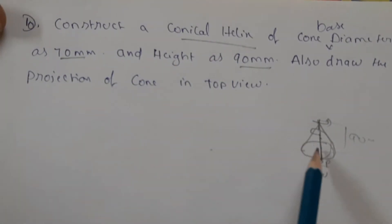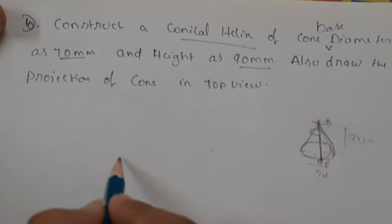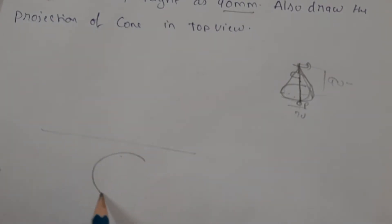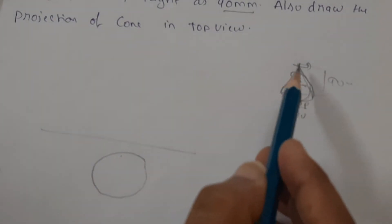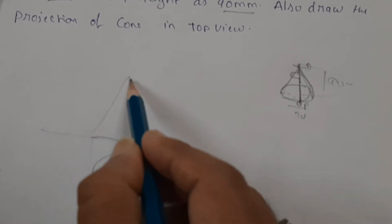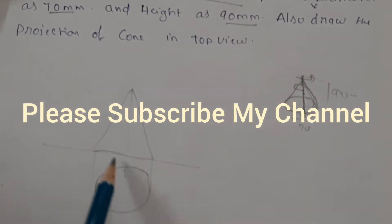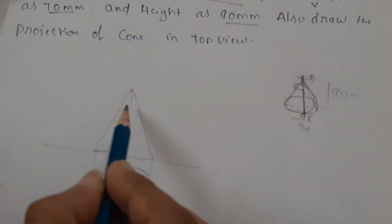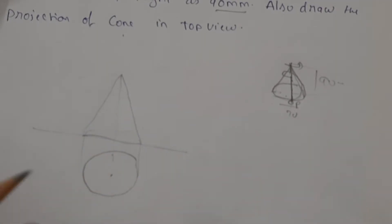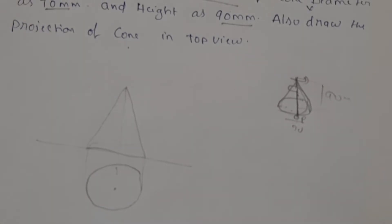If this is the cone, the diameter 70 will be visible in top view, and in front view what you will get is this triangle. He is asking to draw the conical helix for this, and you need to draw the projections of the cone in top view — how the helix looks like in top view also we need to show.